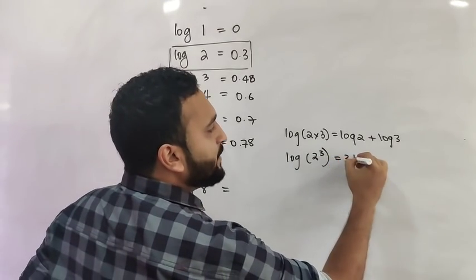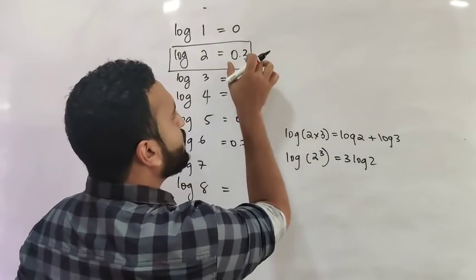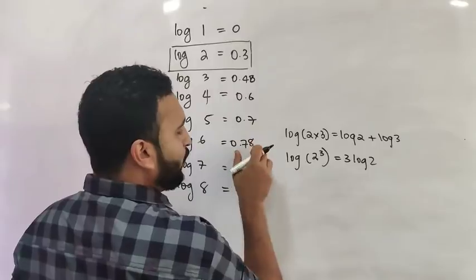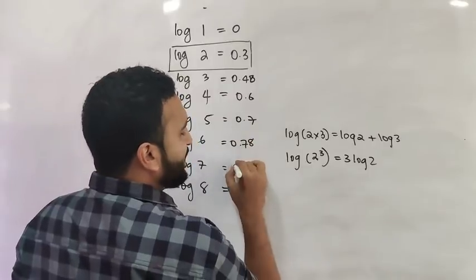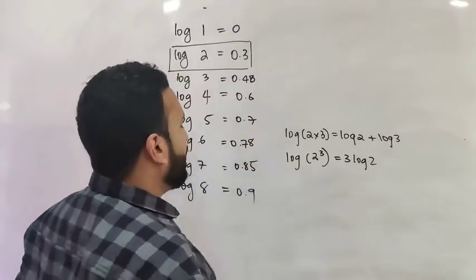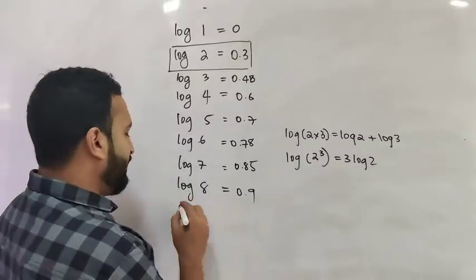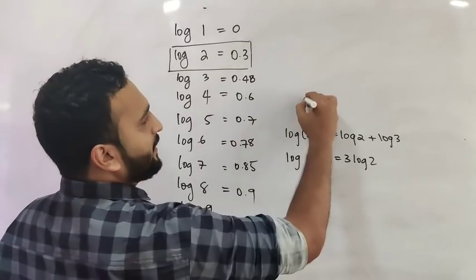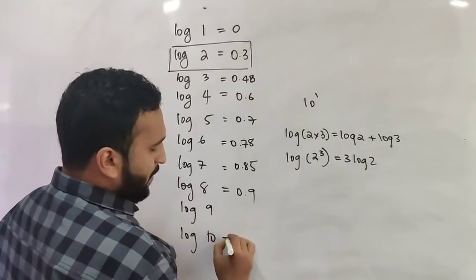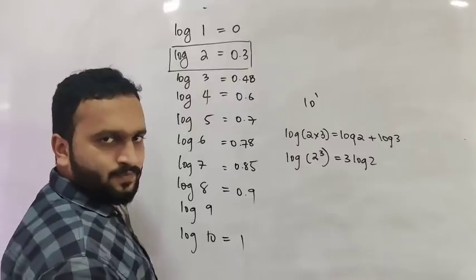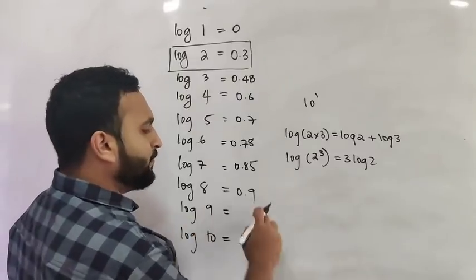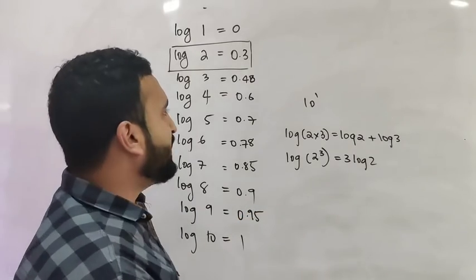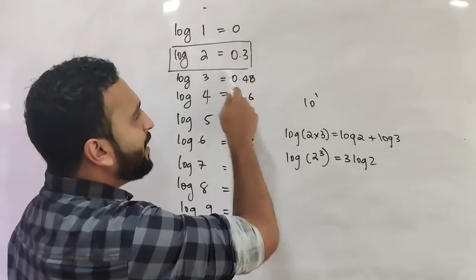Log of 8 is 2 raised to 3, so it is 3 times log 2 = 0.9. Log of 7 is approximately 0.85. Log of 9 is approximately 0.95. Log of 10 is 1.